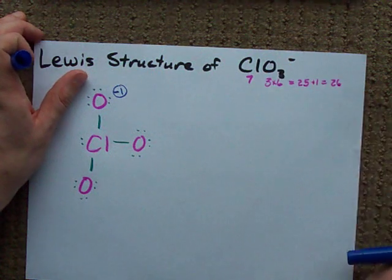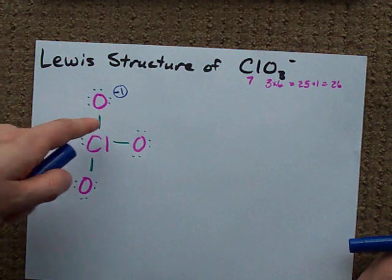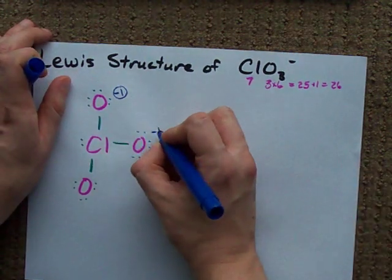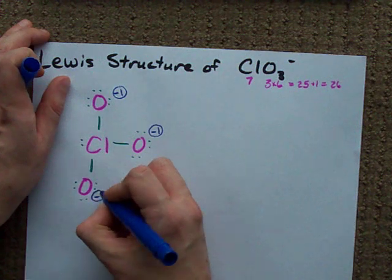So, the formal charge on this oxygen is minus 1, because it has 7, but it brought 6. The formal charge on this oxygen is minus 1 for the same reason, and the formal charge on this oxygen is minus 1 for the same reason.